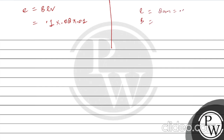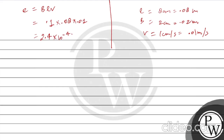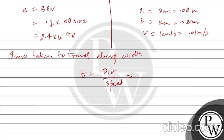First it was 8 cm, now it's 0.08 m. It was 2 cm, now it's 0.02 meter. And velocity was 1 cm per second, now it's 0.01 meter per second. The EMF value comes out to be 2.4 × 10⁻⁴ volts. The time taken to travel along the width is t = distance / v = 0.02 divided by 0.01, which comes out to be 2 seconds.